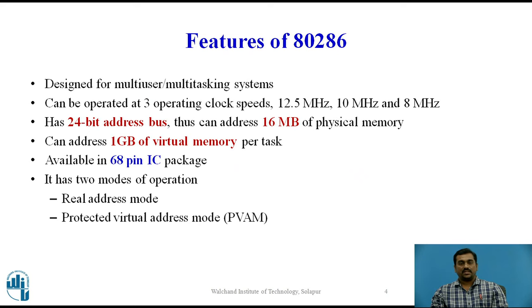Let us see the features of 80286 microprocessor. 80286 microprocessor is designed for multi-user and multi-tasking systems. This microprocessor can be operated at 3 operating clock speeds namely 12.5MHz, 10MHz and 8MHz.